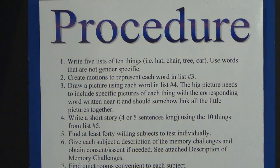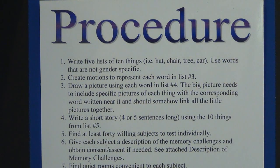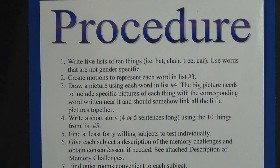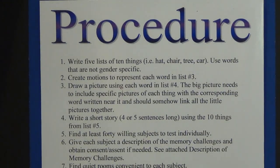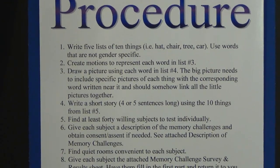In the final example, the question was: does a person's age or gender affect which memory techniques — visual, auditory, or kinesthetic — will work best for them? The procedure was: first, write five lists of ten nouns — words like hat, chair, tree, car — and use words that are not gender specific. Two, create motions to represent each word in list number three. Three, draw a picture using each word in list number four. The big picture needs to include specific pictures of each thing with the corresponding word written near it, and should somehow link all the little pictures together. Four, write a short story, four or five sentences long, using the ten things from list number five.